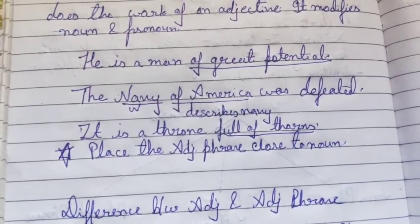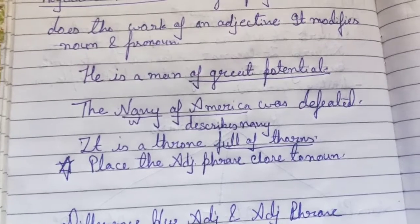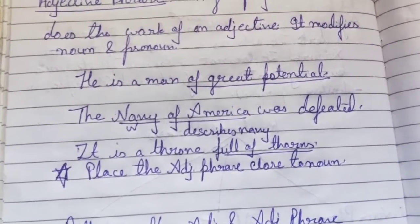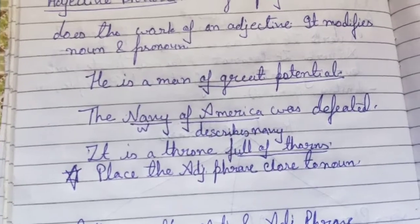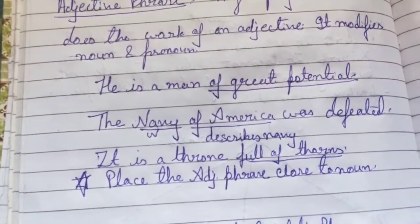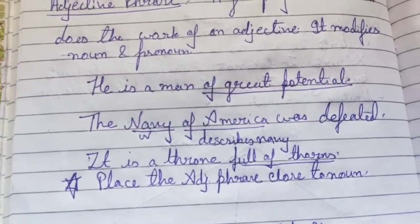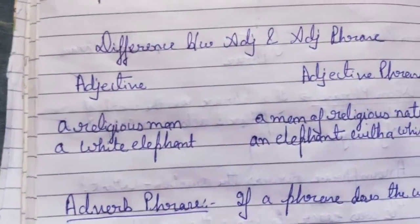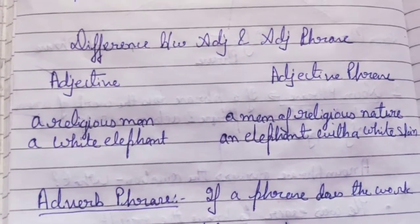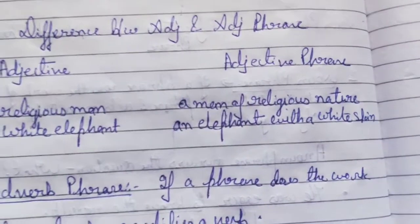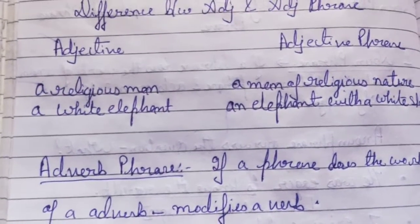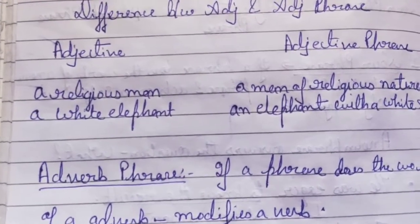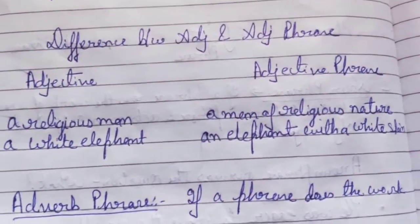Another example: 'It is the throne full of throngs' — 'full of throngs' is an adjective phrase. An important rule to remember: always place the adjective phrase close to the noun it qualifies. You should not be confused between an adjective and an adjective phrase. For example, 'religious man' uses the adjective 'religious,' whereas 'a man of religious nature' uses an adjective phrase. Similarly, 'a white elephant' uses an adjective, while 'an elephant with white skin' uses an adjective phrase.